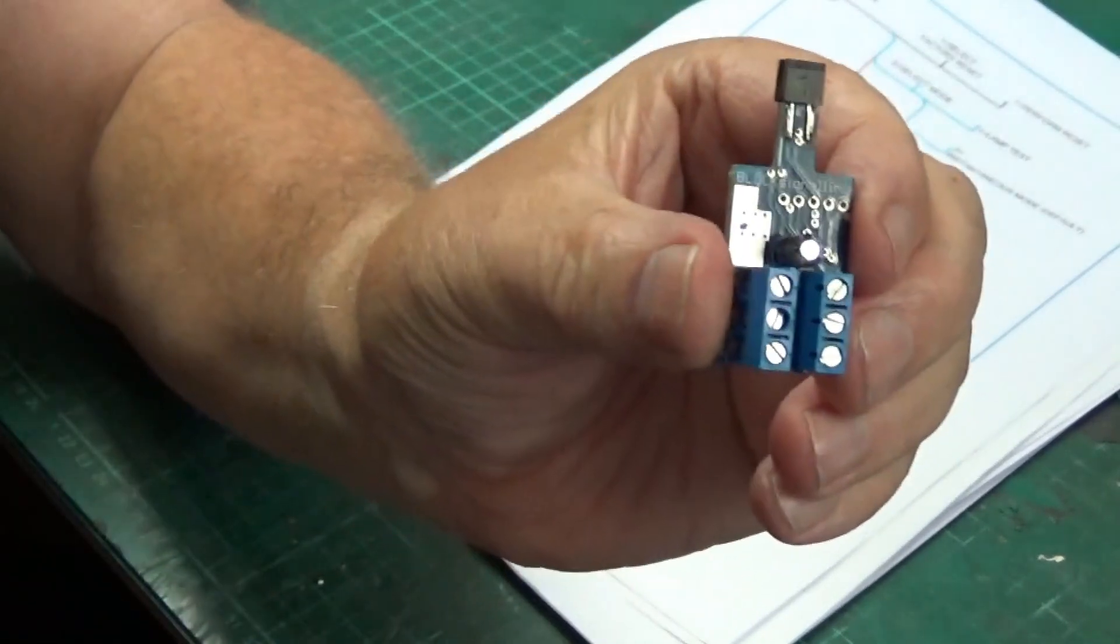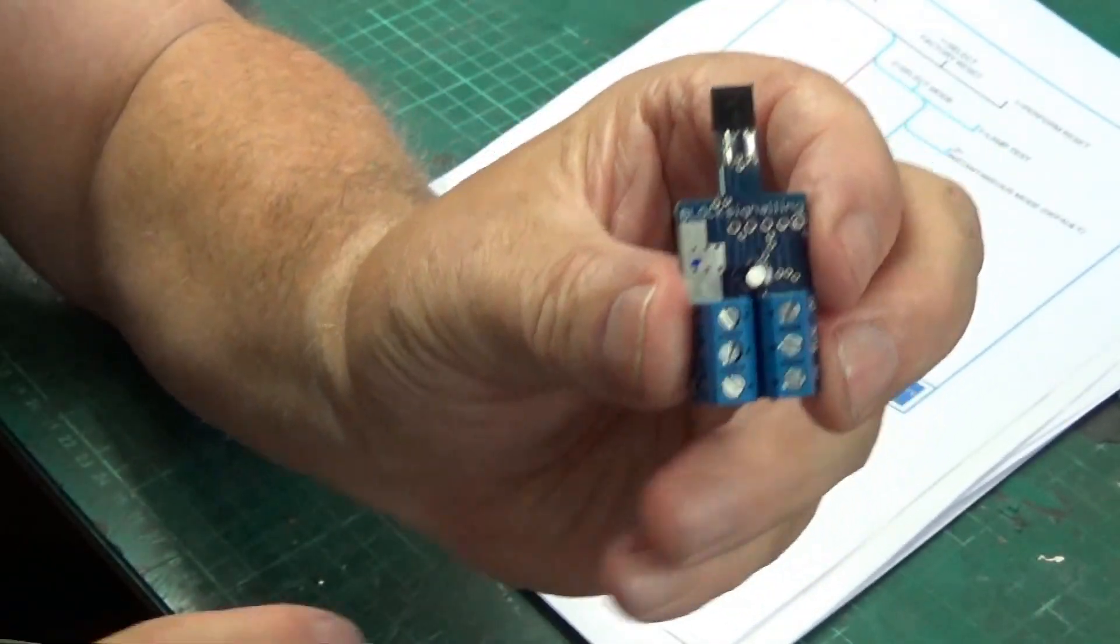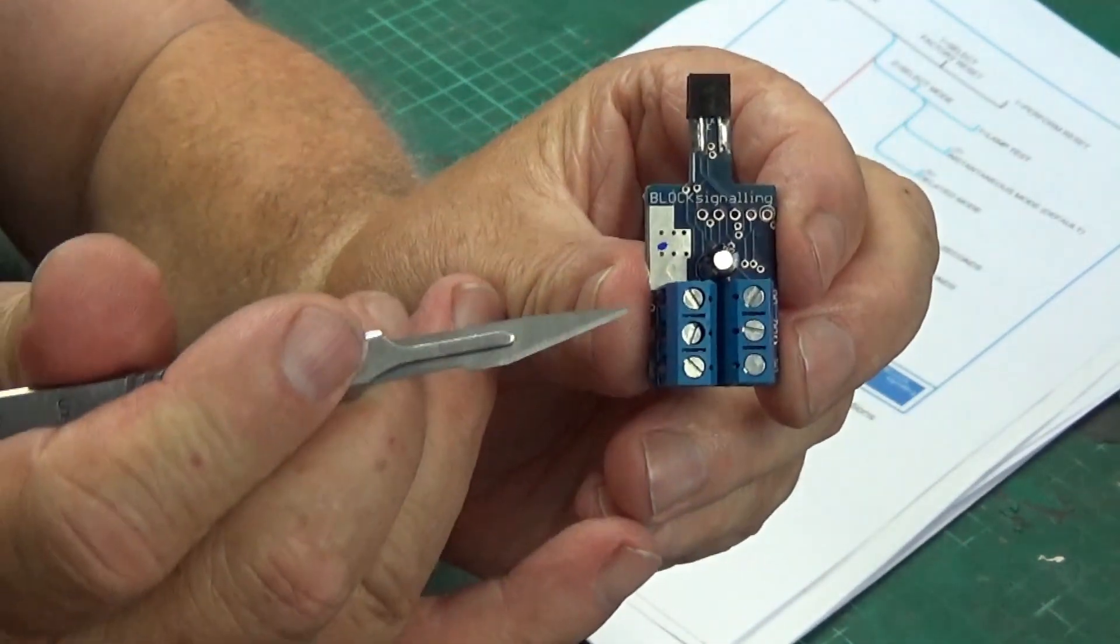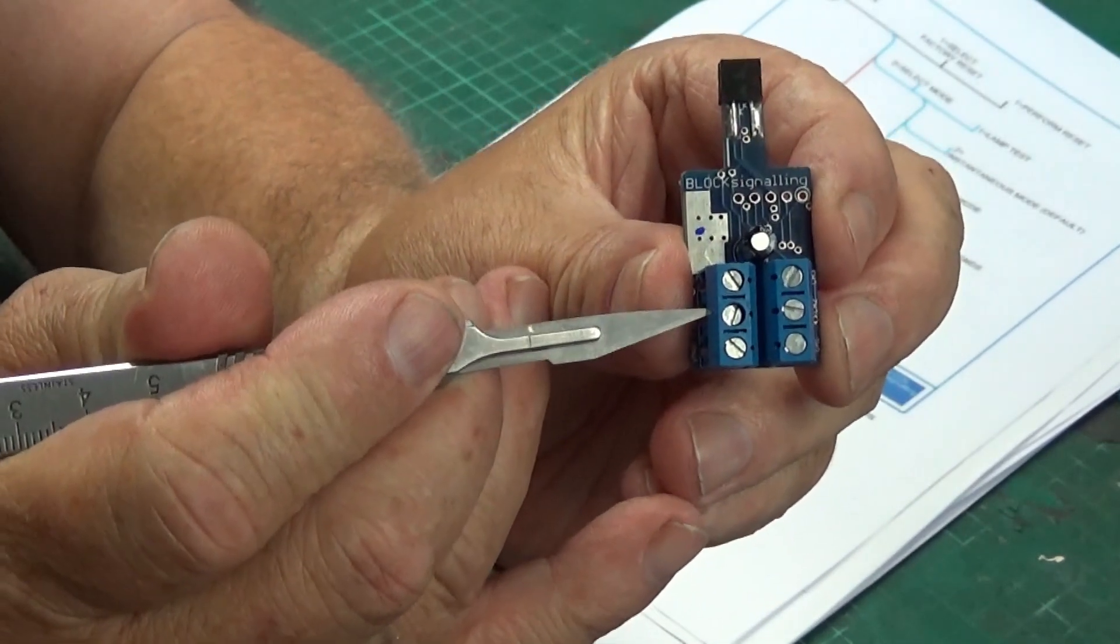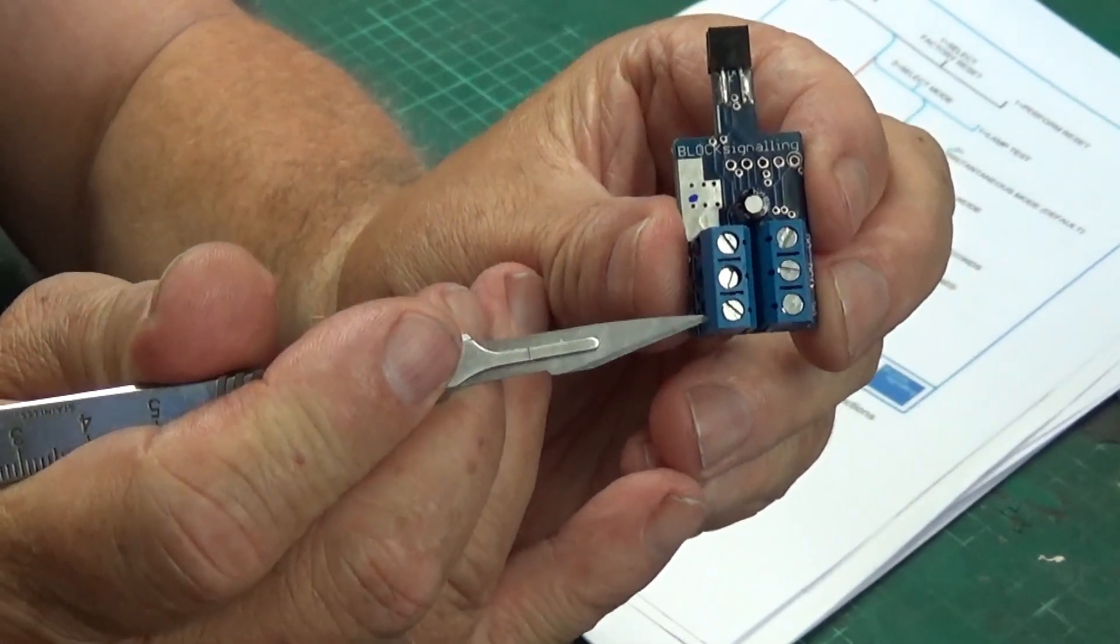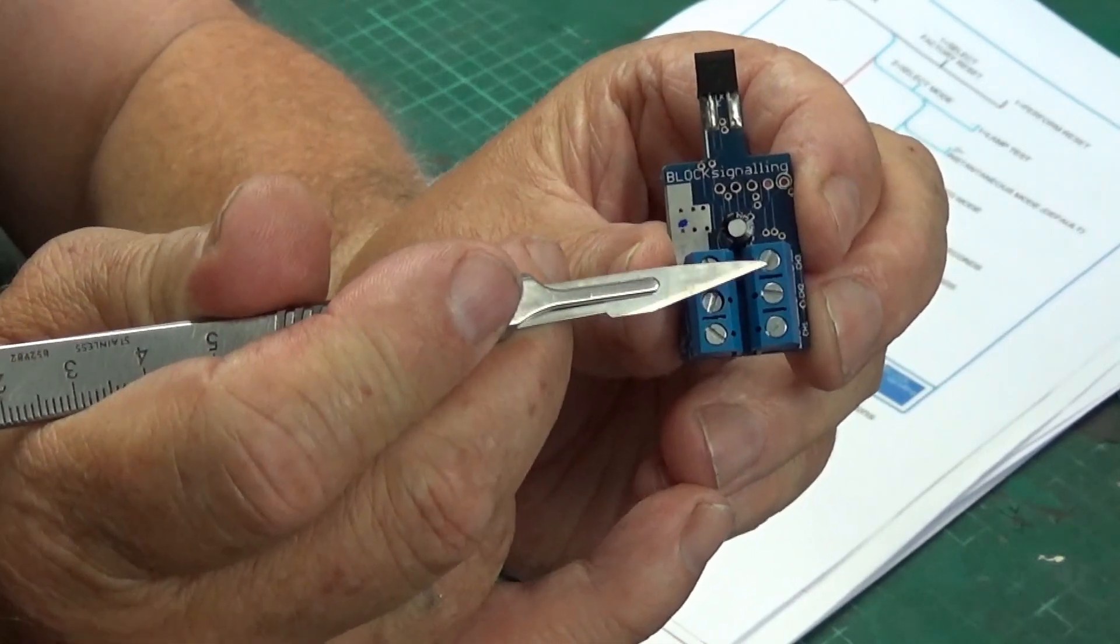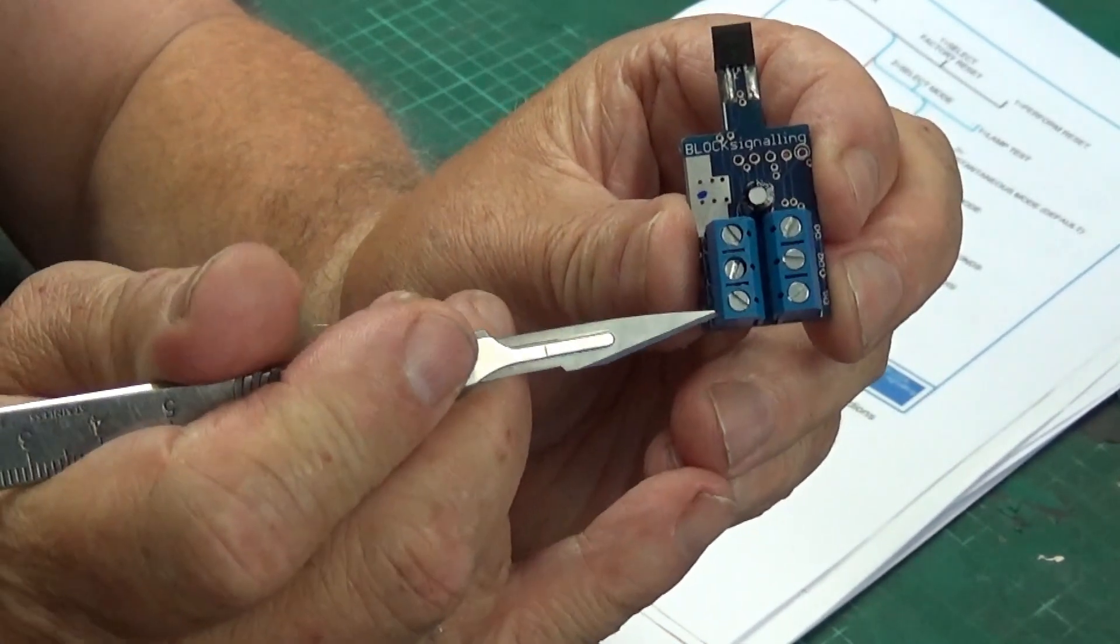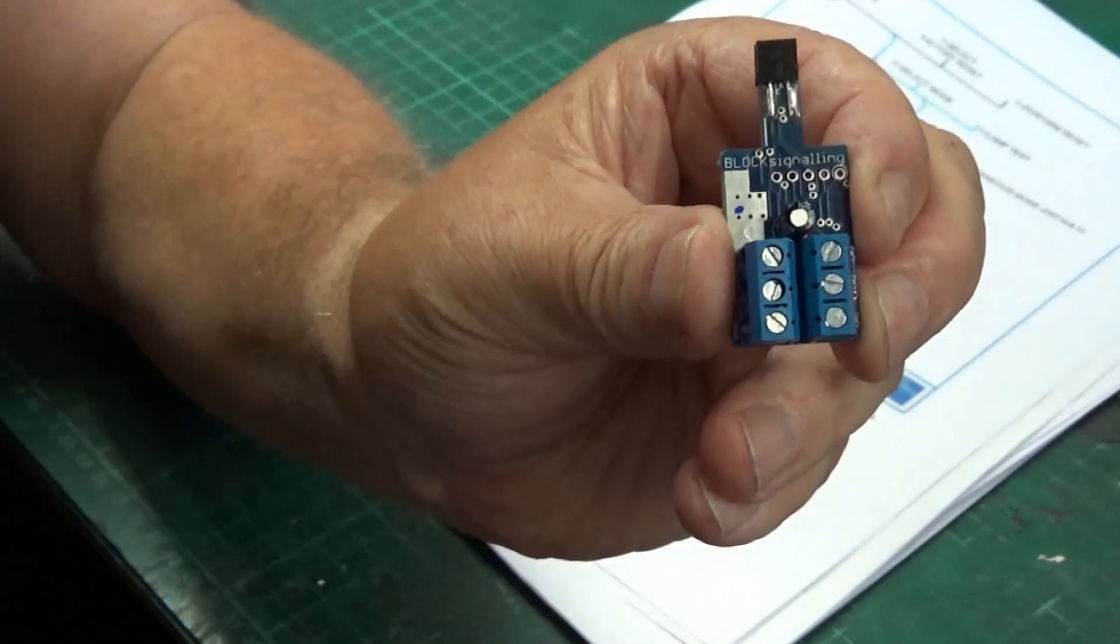The connections on the front are pretty straightforward. You've got six terminals: positive in, negative in, positive out. The positive out is for the operation of your LEDs.